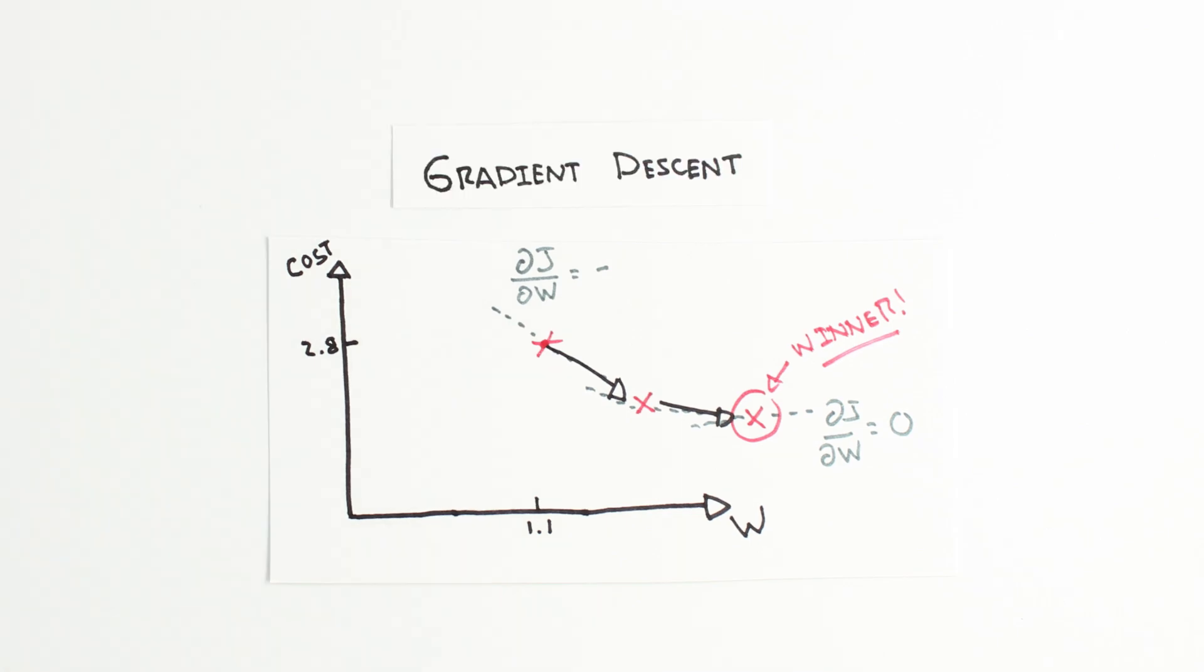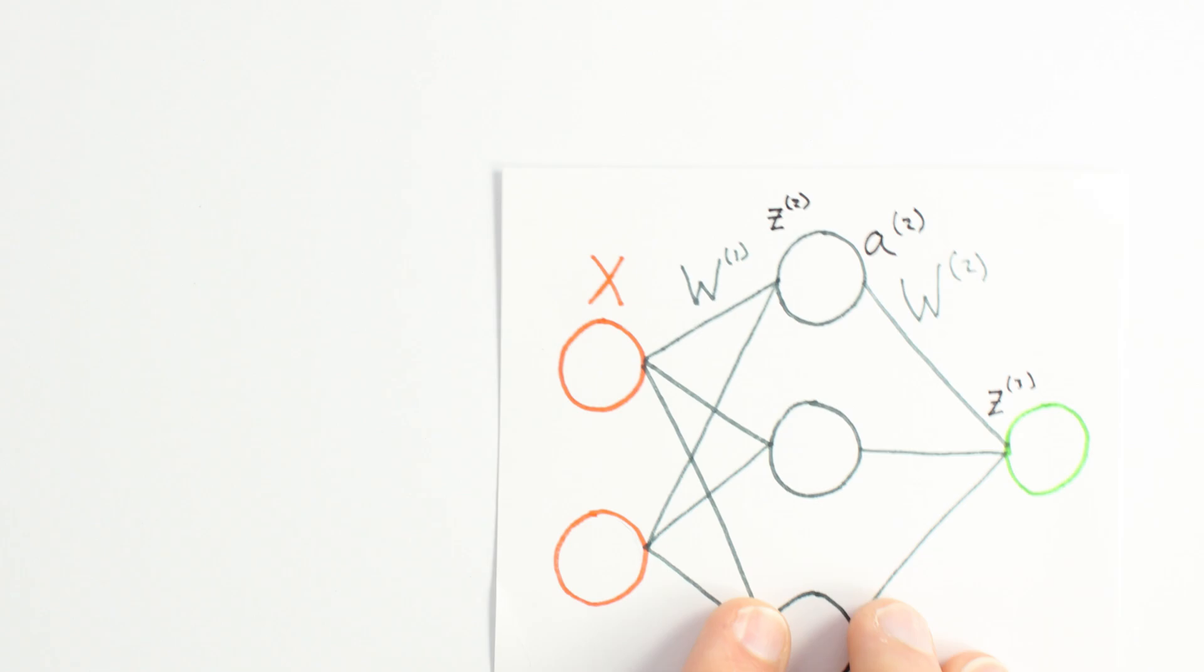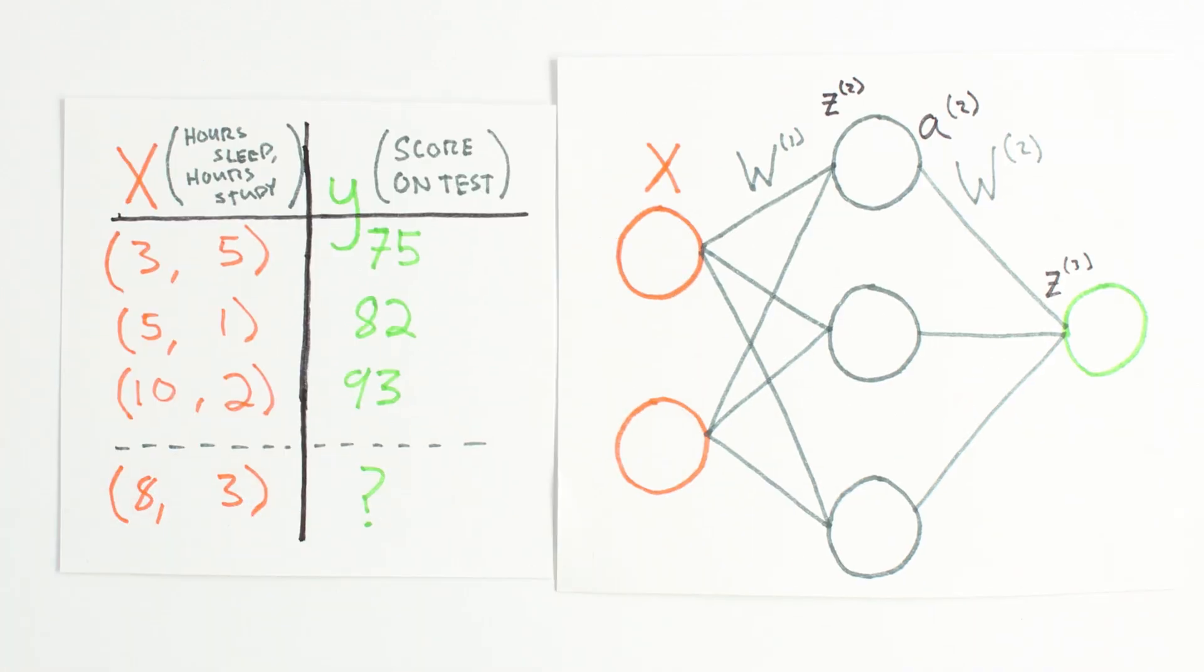Last time, we decided to use gradient descent to train our neural network so it could make better predictions of your score on a test based on how many hours you slept and how many hours you studied the night before.